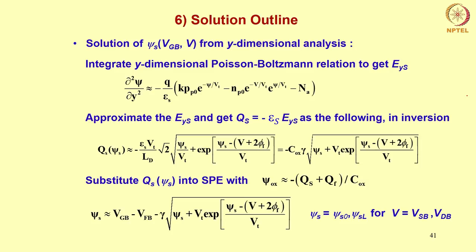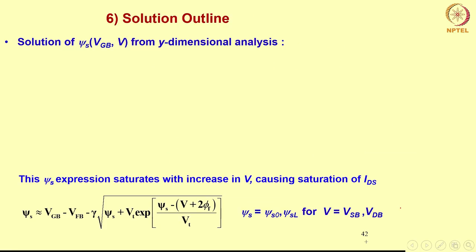After getting Qs as a function of ψs, we substituted this into the surface potential equation (SPE), putting ψox = −(Qs + Qf)/Cox using the gradual channel approximation. This led us to the surface potential equation at the bottom of the slide. Here, ψs = ψs0 for V equal to Vsb; if you substitute Vsb you get ψs0, and if you substitute V = Vdb you get the surface potential at the drain. The important point is this ψs expression saturates with increase in channel voltage V, causing saturation of Ids.